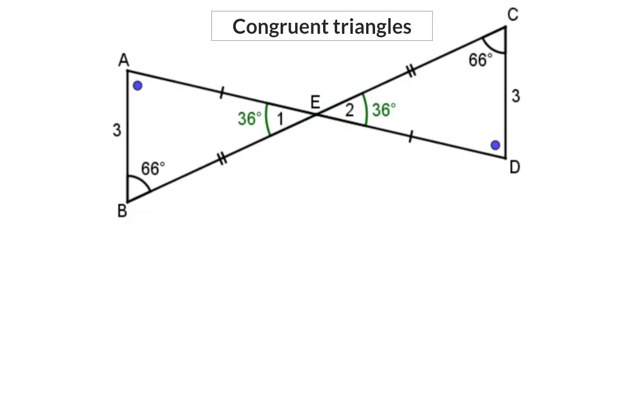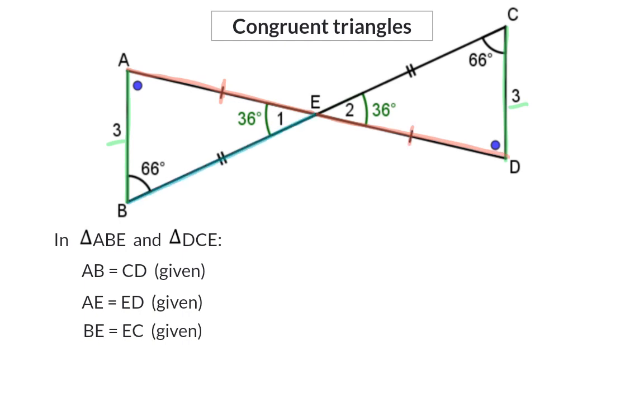In grade 9 you will focus in depth on congruent triangles, but in grade 8 we can still write down what we know about two triangles. In these two triangles we know that side AB is equal to side CD. I was also given that side AE is the same length as ED and the third pair of sides BE is also equal to EC.